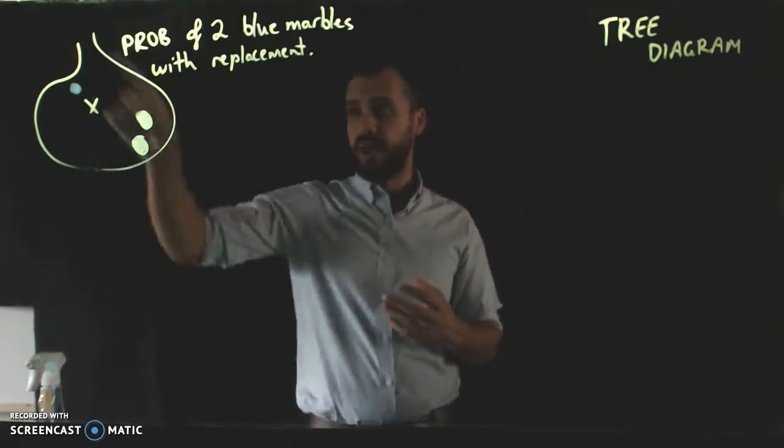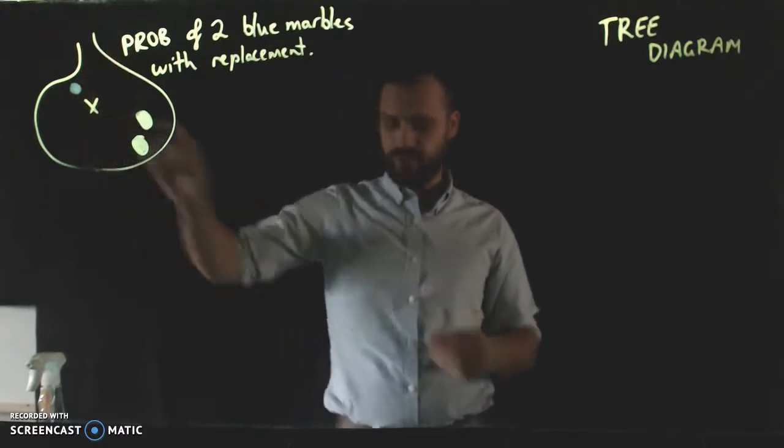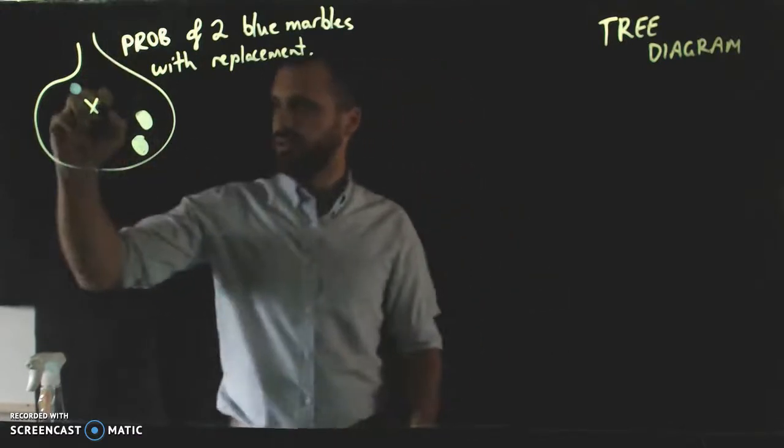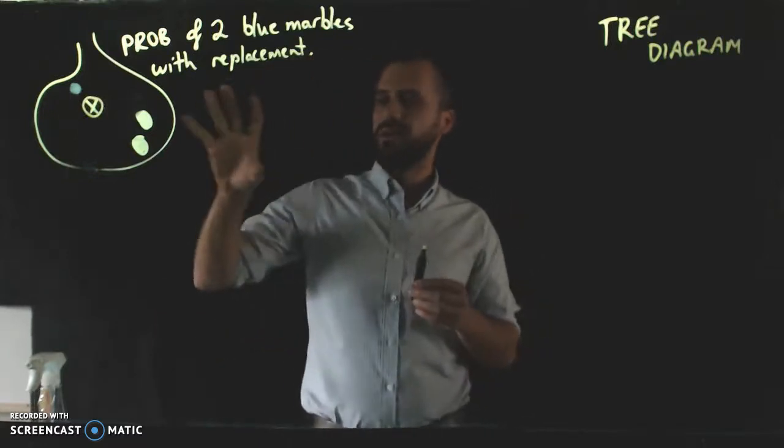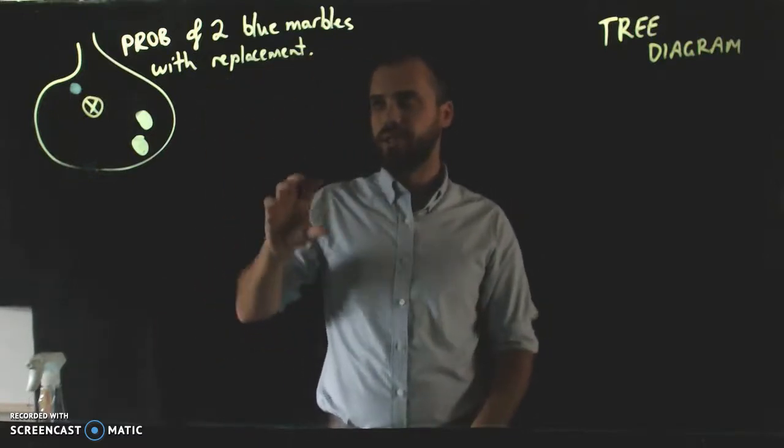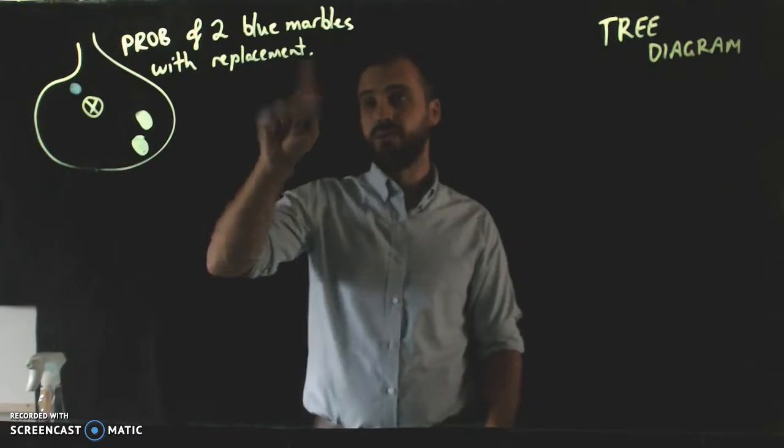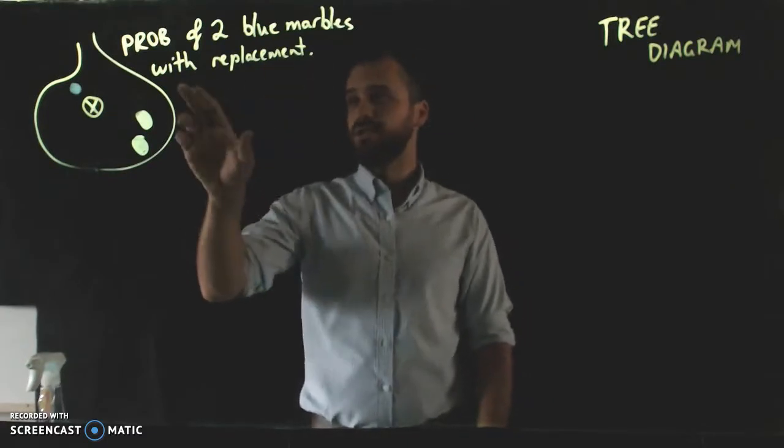Okay, so here's our bag of marbles again. I know we've got a funny colorless one. Let's call it a marble with like a cross on it. Now we want to know the probability of pulling out two marbles, two blue marbles, and we use this word with replacement.